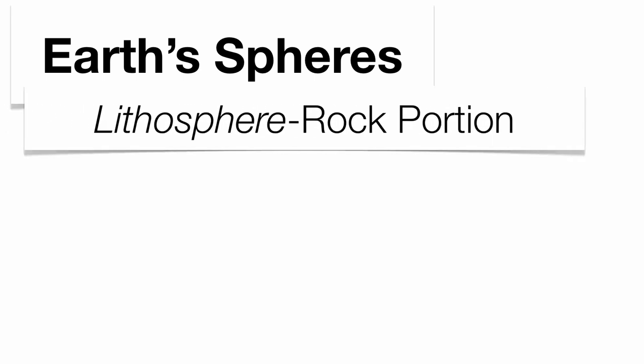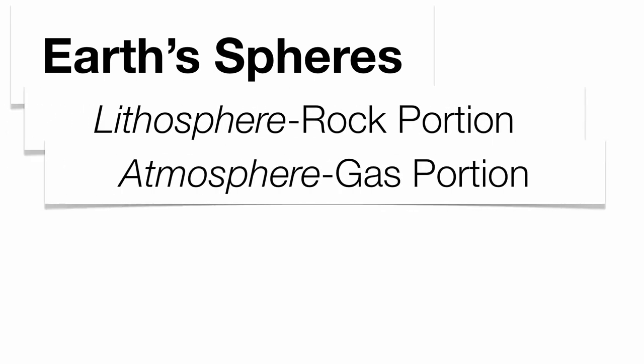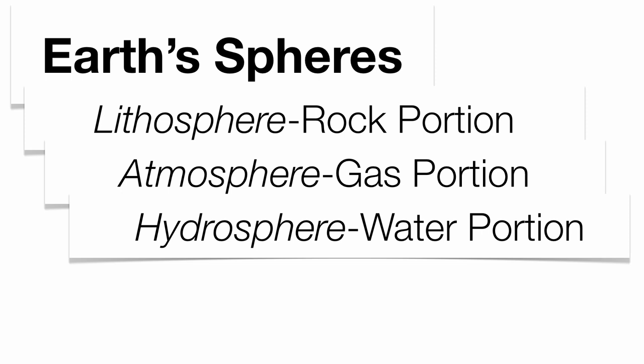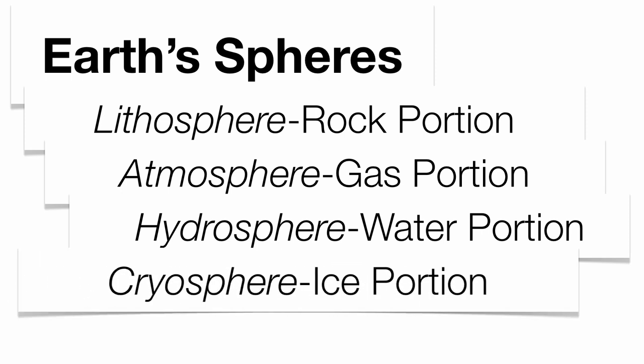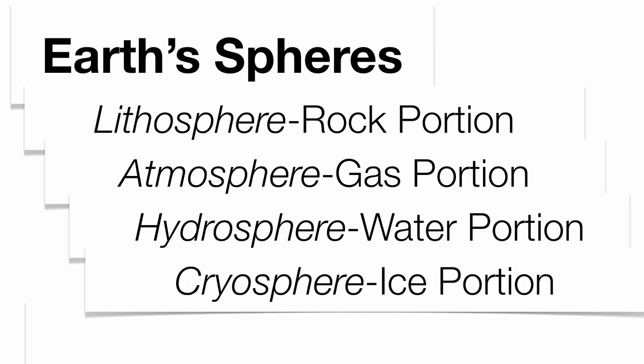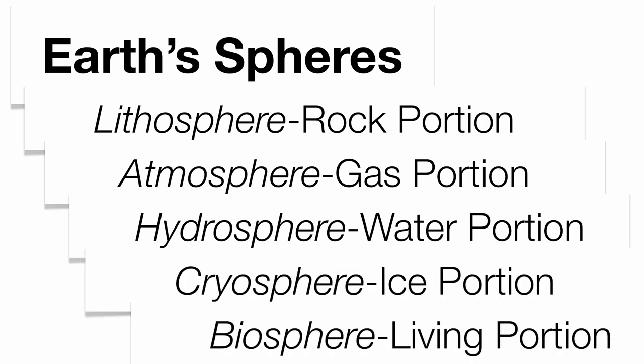The Earth is quite complex. It has multiple layers and multiple sections that interact with each other on a constant basis — that's what we call Earth's spheres. The rock portion is called the lithosphere, the gas portion is the atmosphere, the water portion is the hydrosphere, the ice portions are the cryosphere, and the living portions are what we call the biosphere. Those spheres are constantly interacting with each other each and every day.